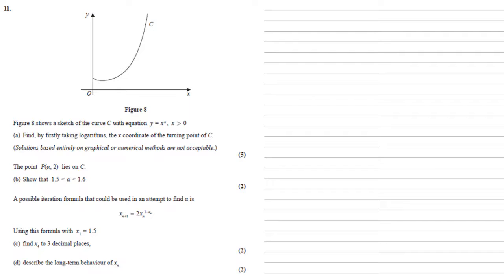For part C, a possible iteration formula that could be used in an attempt to find alpha is x n plus 1 equals 2x n to the power of 1 minus x n. Using this formula with x1 equals 1.5, we need to find x4 to three decimal places. So x2 equals 2 times 1.5 to the power of 1 minus 1.5, which is 2 times 1.5 to the power of minus 0.5, which is 1.633.